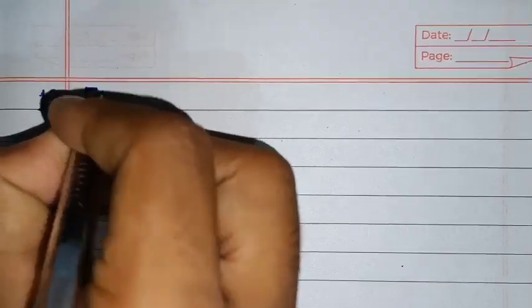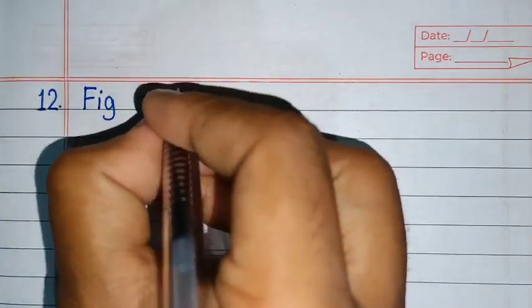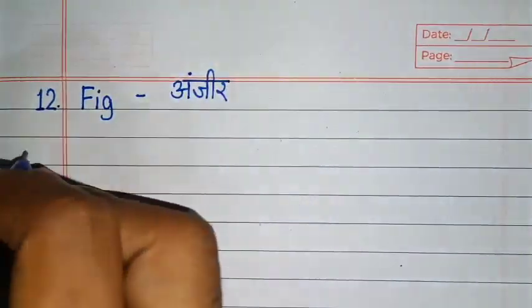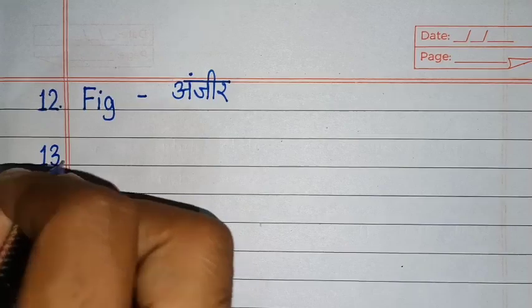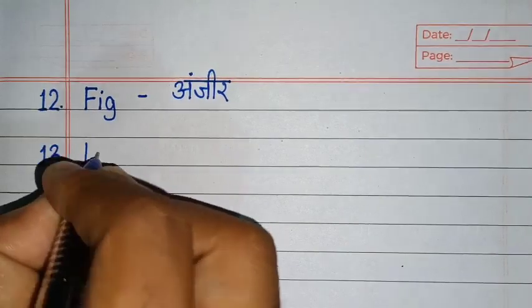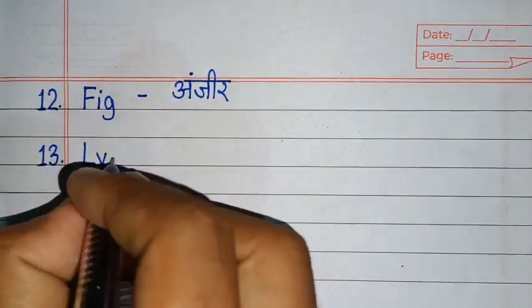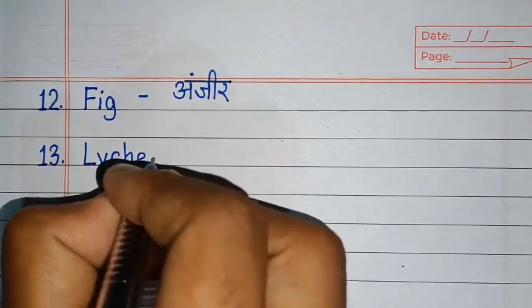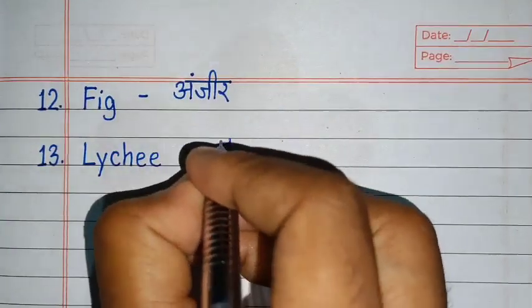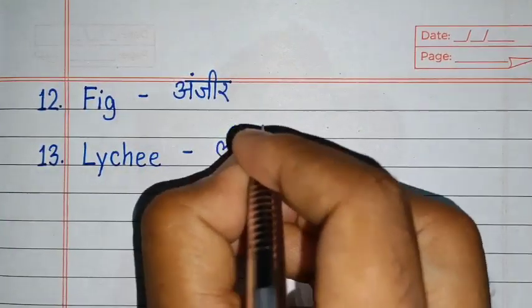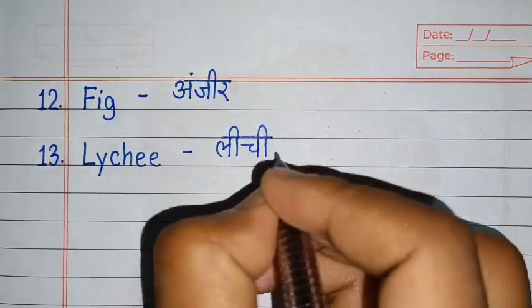F, I, G. Fig. Fig means anjeer. L, Y, C, H, E, E. Lychee. Lychee means lychee.